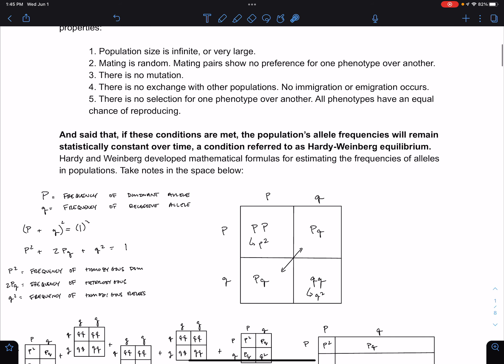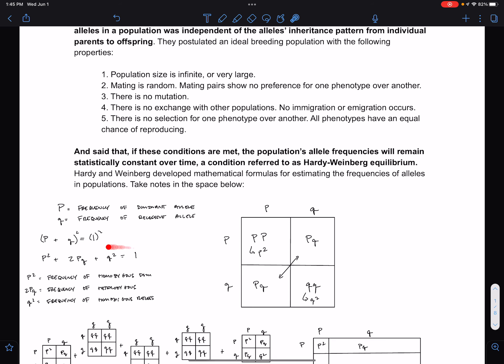However, if we see that allele frequencies are changing from one generation to the next, then we know that the population is evolving with respect to the gene that we're looking at. And so we can go back to our list here and say, what is happening?